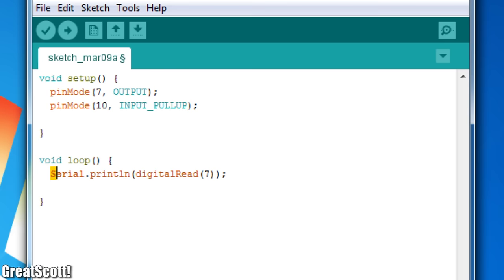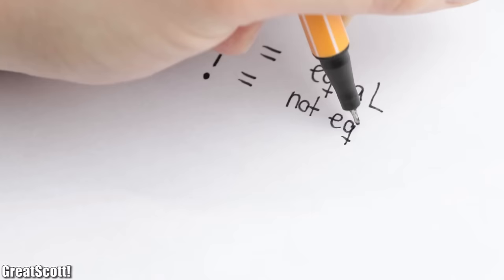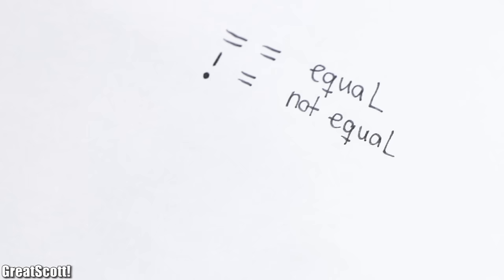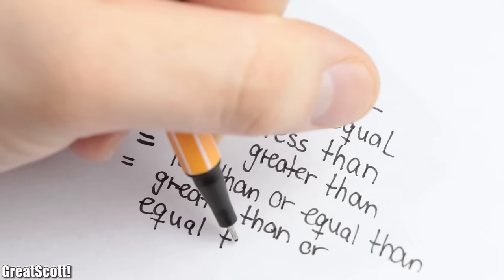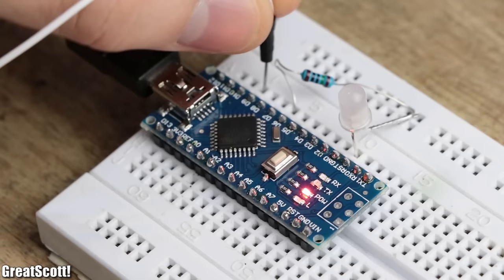Most popular are if, for, while, and switch structures. By utilizing if, we can perform an action like pulling high a digital pin if a specific condition is met. In this case, the double equal sign basically means equal. But there also exists the not equal, less than, greater than, less than or equal to, and greater than or equal to comparison operators.